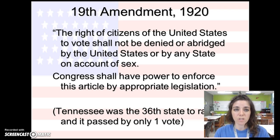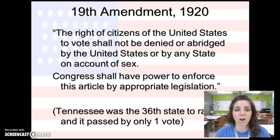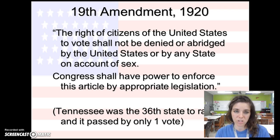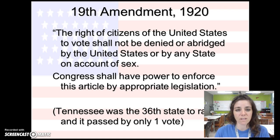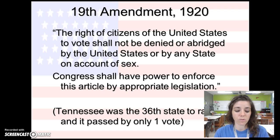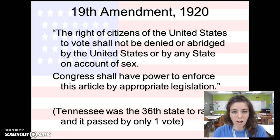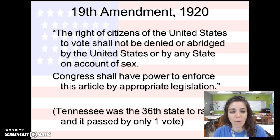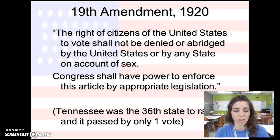In 1920, finally, the 19th Amendment was passed. It stated: 'The right of citizens of the United States to vote shall not be denied or abridged by the United States or by any state on account of sex. Congress shall have power to enforce this article by appropriate legislation.' Just as the 15th Amendment gave African Americans the right to vote without discrimination on color, the 19th Amendment meant no more discrimination on gender. Tennessee was important as the last state to ratify — it came down to one person: Harry Burns, also one of your vocab words.